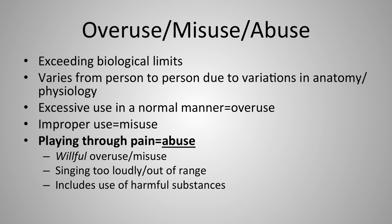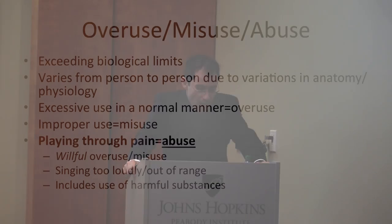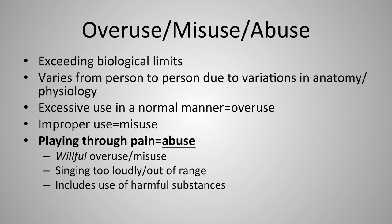Overuse, misuse, and abuse are very important concepts. When we exceed our biological limits, bad things tend to happen. Knowing your biological limit is strictly individual and a work in progress. Excessive use in a normal manner is overuse; improper use of your hands or voice is misuse. Playing through pain — the 'no pain no gain' mentality — constitutes abuse and is never a good idea. For singers, singing too loudly or out of range, or use of harmful substances, also constitutes abuse.